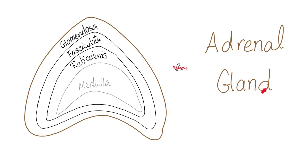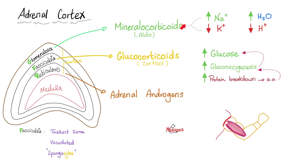The two layers of the adrenal gland are the cortex and medulla. The three sub-layers of the cortex are zona glomerulosa, zona fasciculata, and zona reticularis. Zona glomerulosa secretes mineralocorticoids such as aldosterone; zona fasciculata secretes glucocorticoids such as cortisol; zona reticularis secretes adrenal androgens. Why mineralocorticoids? Because aldosterone affects your minerals — sodium and potassium. Why glucocorticoids? Because cortisol boosts your blood glucose. Medicine makes so much sense once you understand what you're talking about.